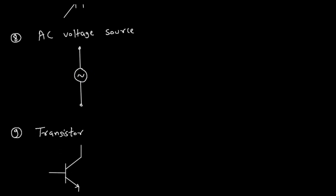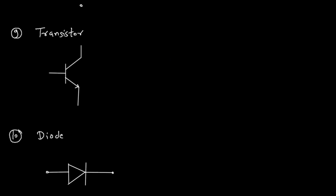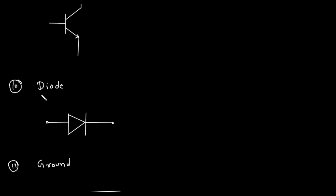Then next is transistor. This is the symbol for transistor. Next is diode. Diode allows the flow of current in one direction and it looks like an arrow. This is the symbol for diode.